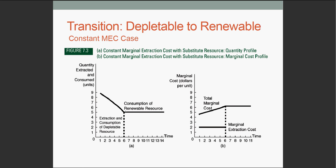Similarly here, when the cost changes at T equals 6, the quantity extracted falls, and then we will consume the renewable resource instead.